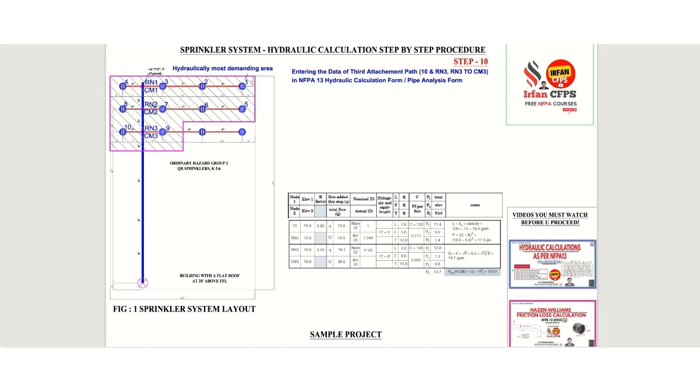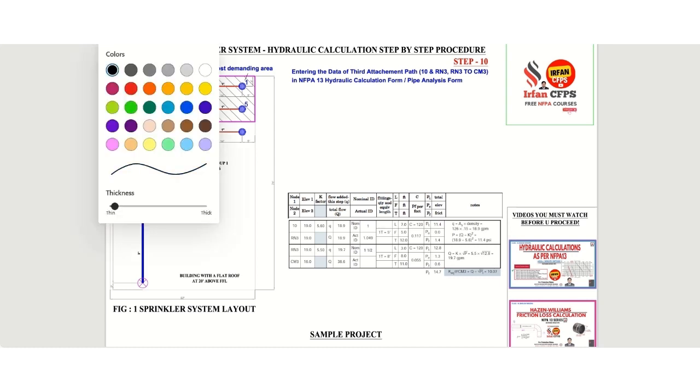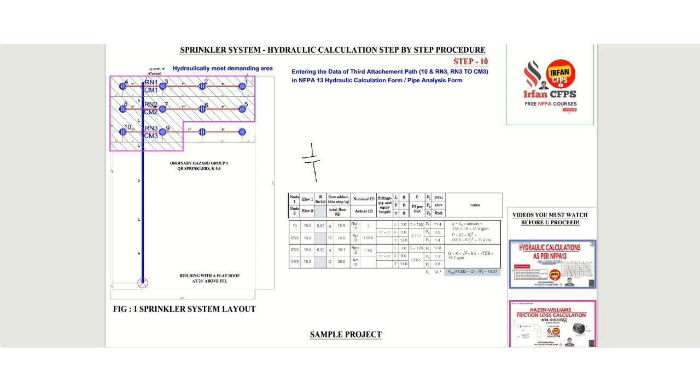We already calculated the K factor from step 9 via 9 to RN3 path. So now what we are going to do is once again, we are going to draw the isometric. I am repeating this isometric several times so that you people should not forget this one. So this is the check wall. It is going like this, and here we have CM3, and we are considering node 10. So our path will be 10 to RN3 and then RN3 to CM3.